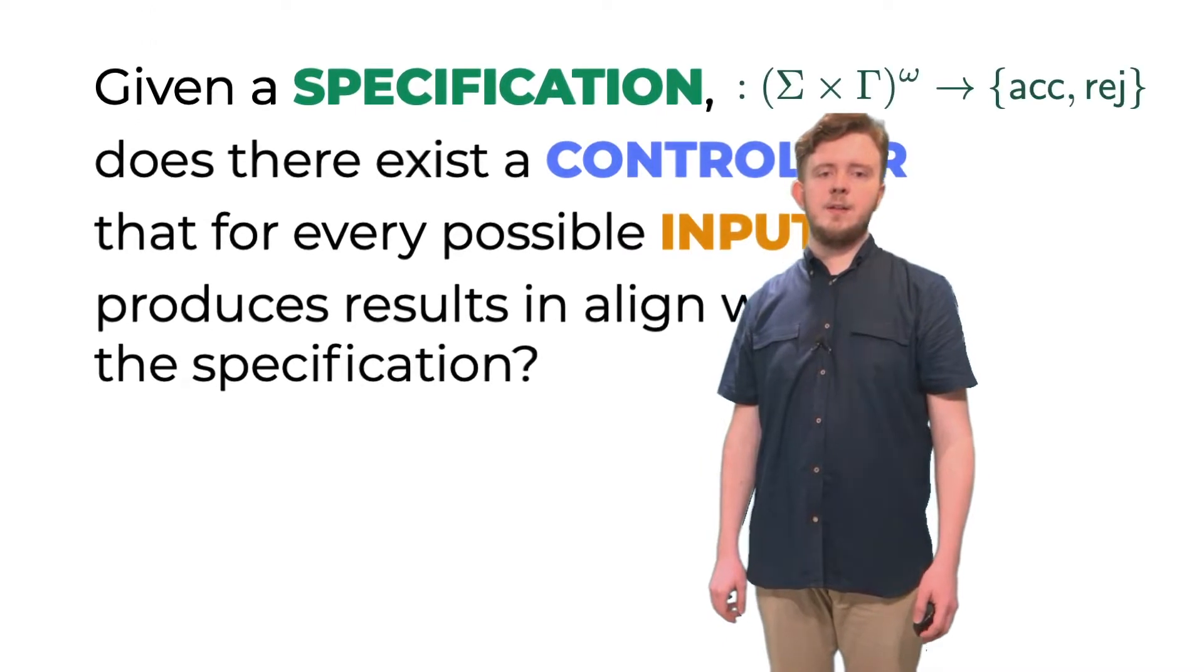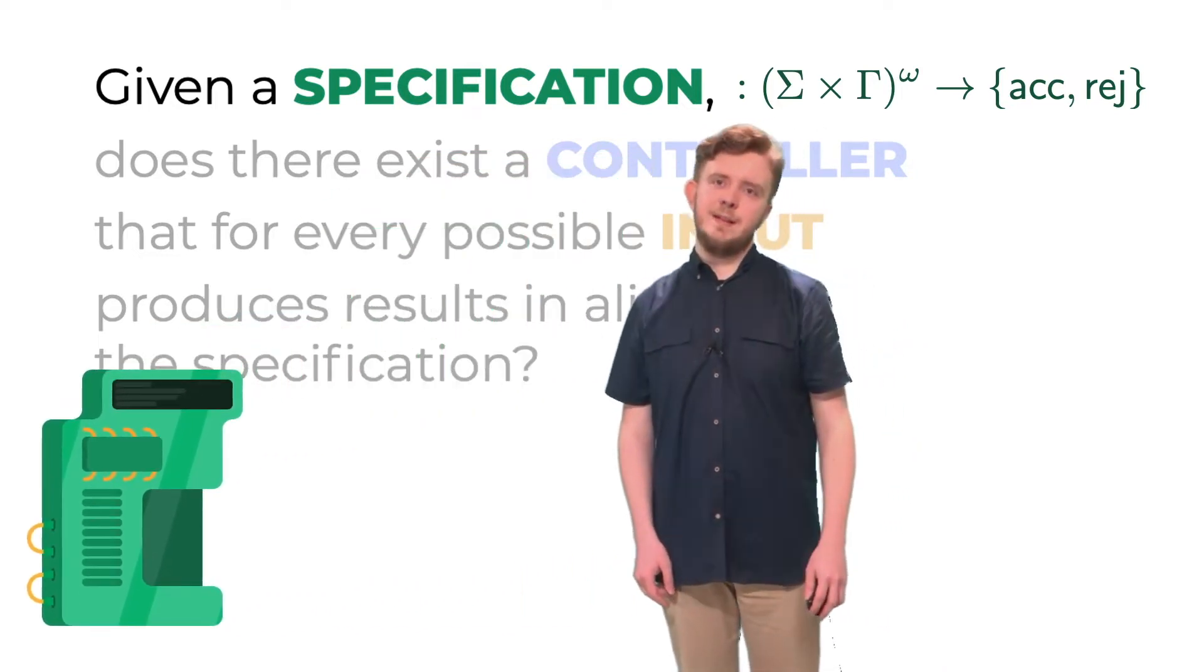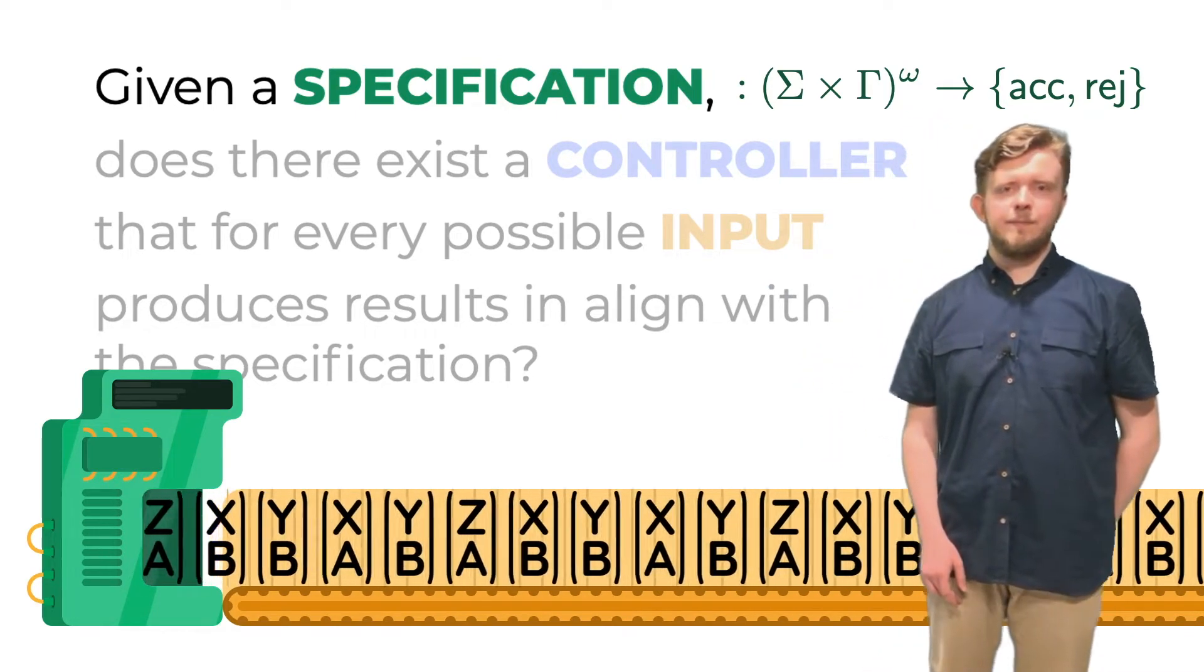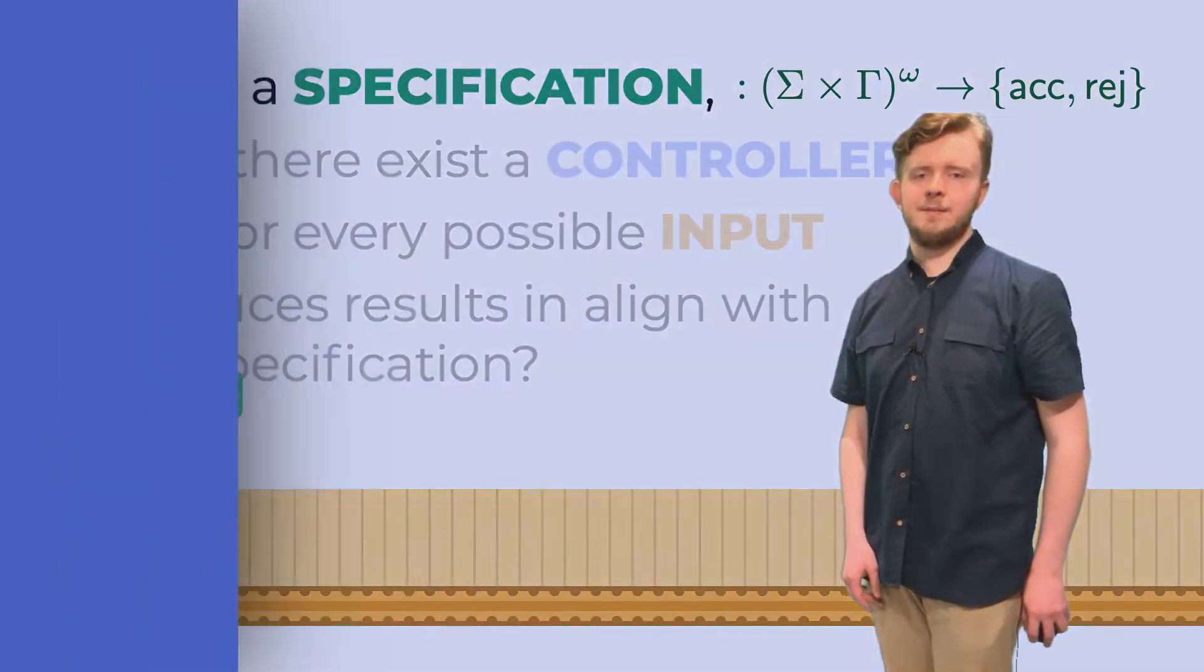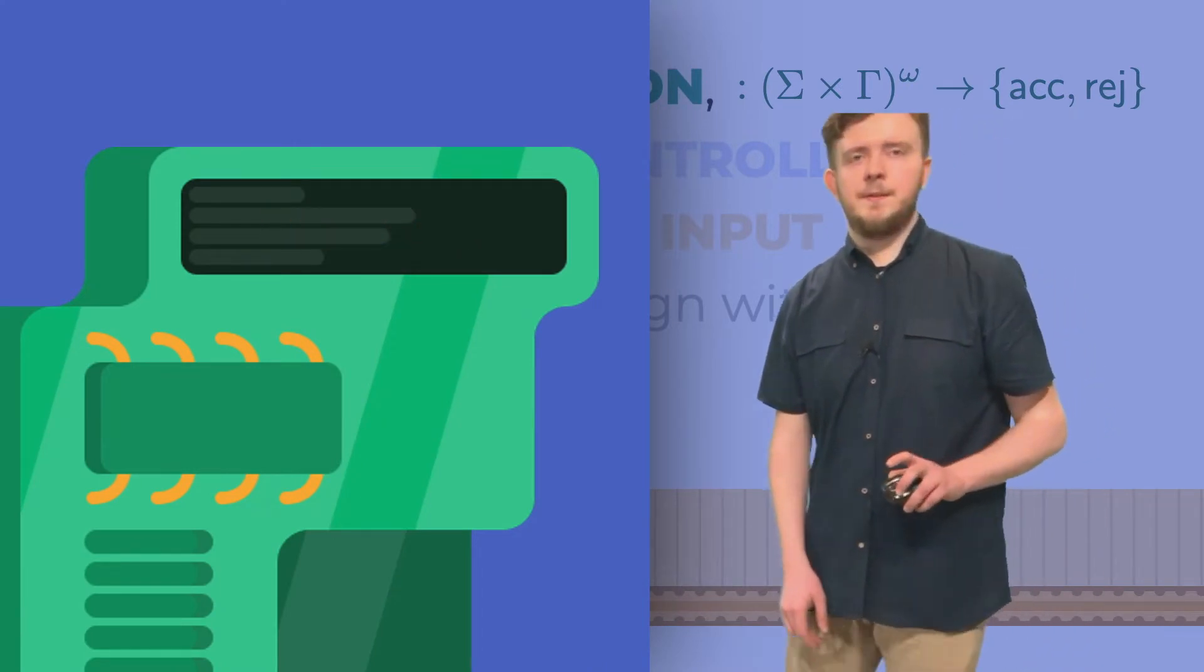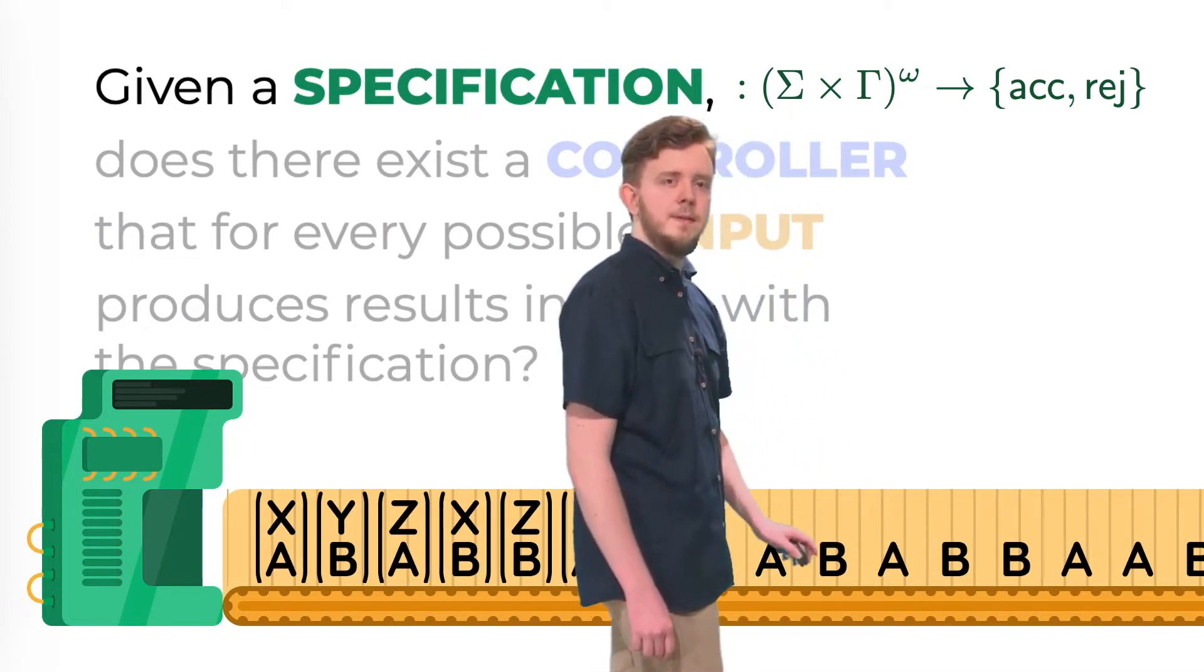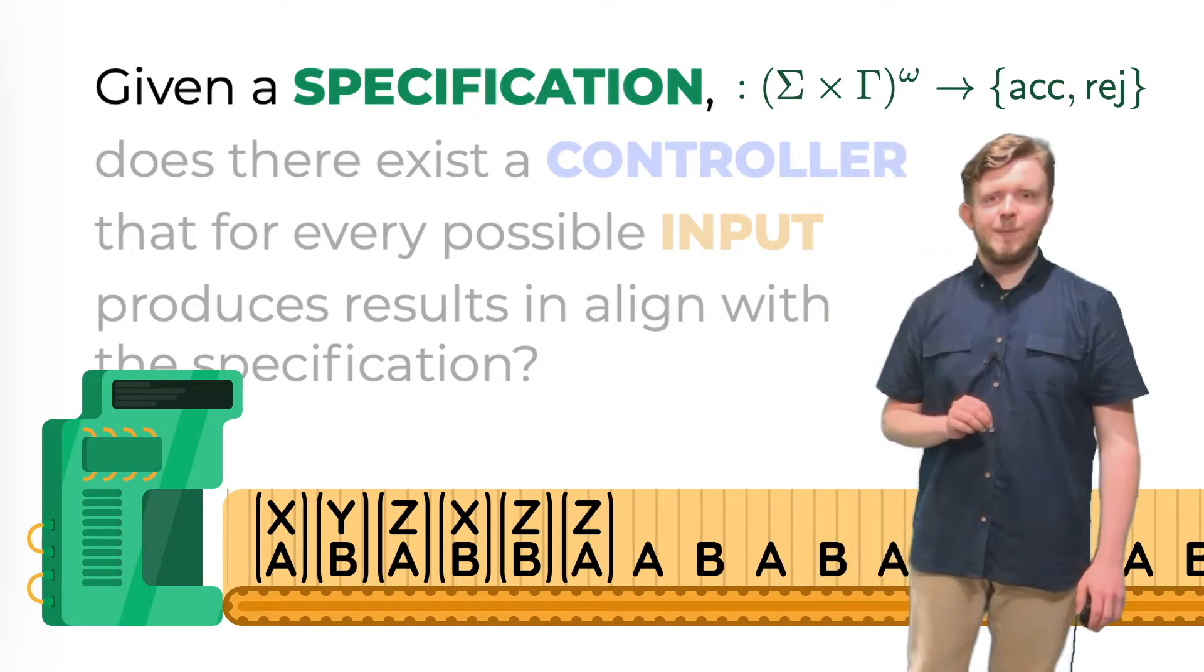I would like to present it visually the following way. We are given a green machine, a specification, and it is fed with an infinite word of pairs of letters. It reads the word letter by letter. And finally, when it reads the whole infinite word, it answers either accept or reject. But that is only a part of our pipeline. In fact, the input here consists only of a single string of letters. So clearly something is missing here in the middle.